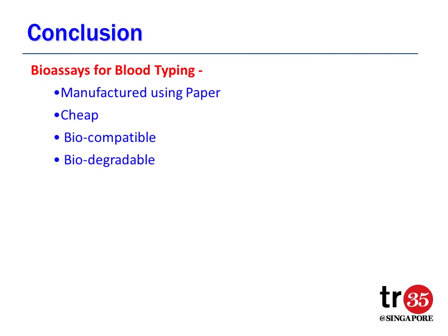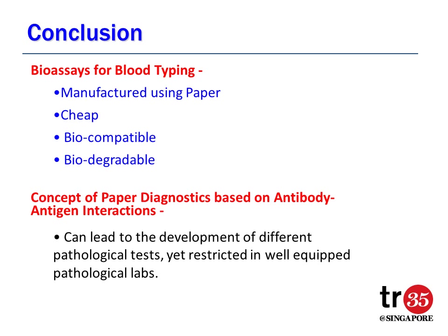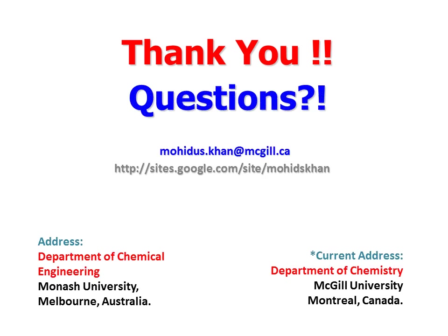In conclusion, we find bioassays for instantaneous blood typing can be manufactured using paper, which is cheap, biocompatible, and biodegradable. The concept of diagnostics based on antigen-antibody interaction and differences in wicking and chromatography can open a new horizon for researchers and will lead to the development of different pathological tests, currently restricted to well-equipped pathological labs, by using much more convenient paper diagnostics. This can also promote health in developing countries. At last, I would like to thank you all for your time. If you have any questions or queries, please feel free to contact me.